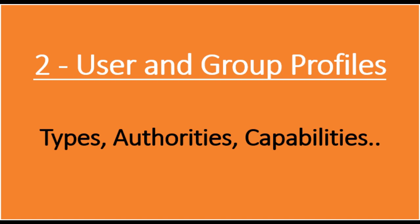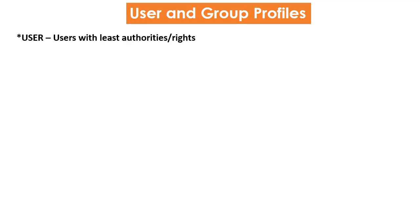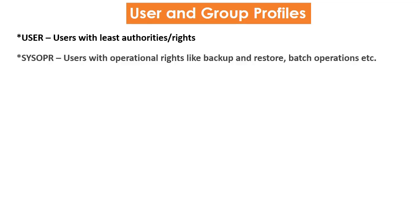Point number 2: Users and Group Profiles. There are five different types of users that can be created on the AS/400. Number one is *USER — users with least authorities or rights. Number two is *SYSOPR — users with operational rights like backup, restore, batch operations, etc.